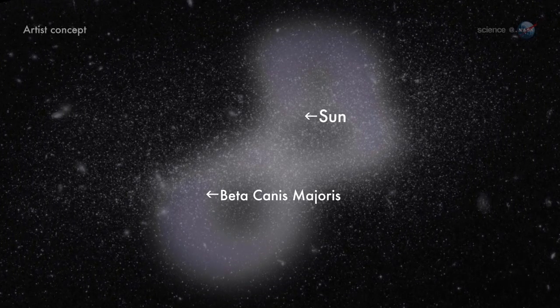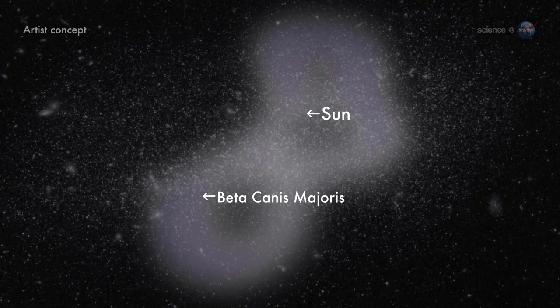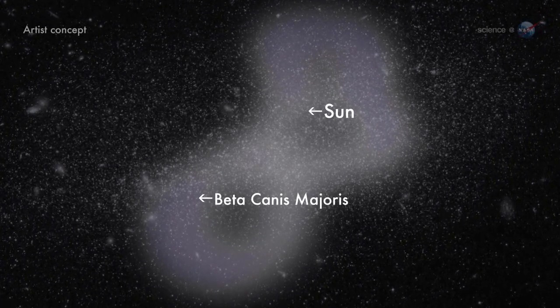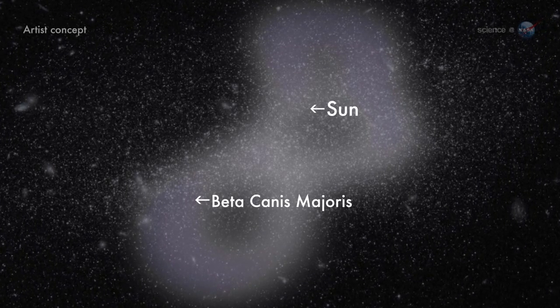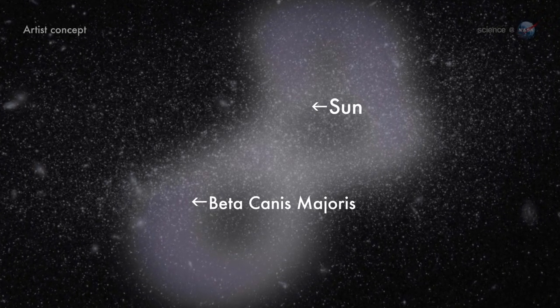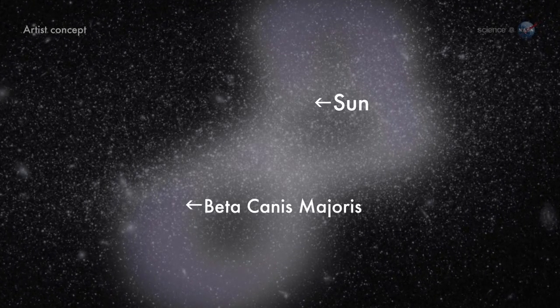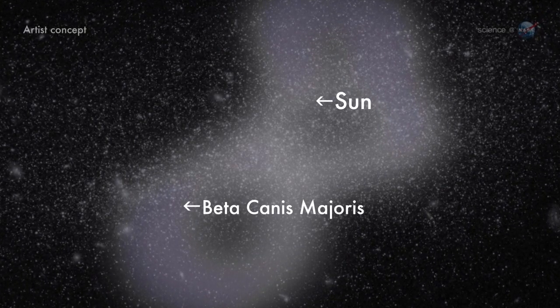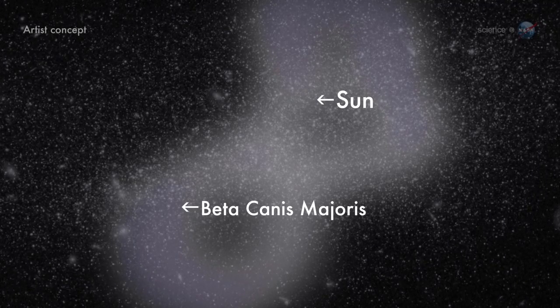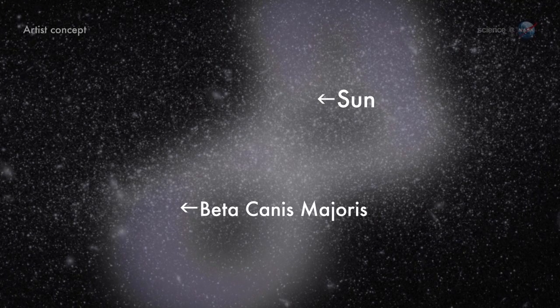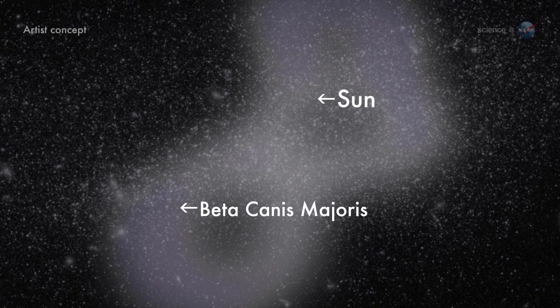Astronomers call it the local bubble. It is peanut shaped, about 300 light years long, and filled with almost nothing. Gas inside the bubble is very thin, 0.001 atoms per cubic centimeter, and very hot, roughly a million degrees. A sharp departure from ordinary interstellar material.